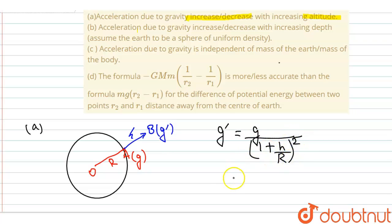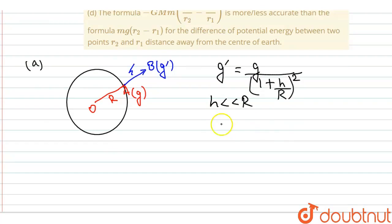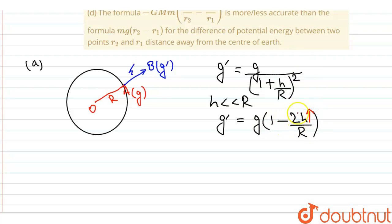Now if h is very very small compared to the radius of the Earth, I can write: g-dash equals g times (1 minus 2h/R). Now if we increase the altitude, that is h increases, this whole factor decreases, and subtracting it from 1, it will definitely get decreased. So g-dash decreases — acceleration due to gravity decreases with increasing altitude.